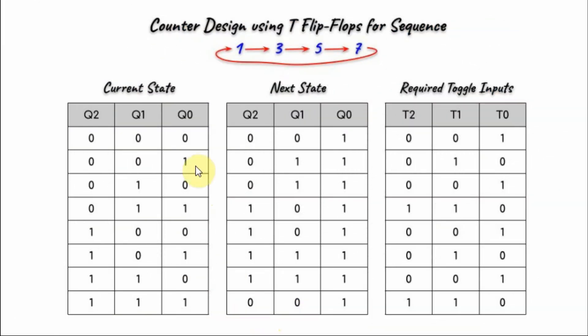The next step is to combine the truth table of the current state with each of the columns of the required inputs, and using Karnaugh maps to derive the Boolean expressions for T2, T1, and T0.